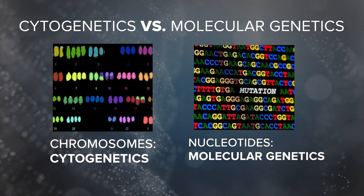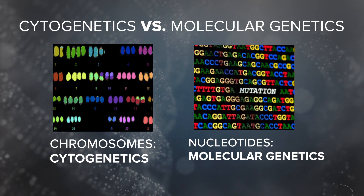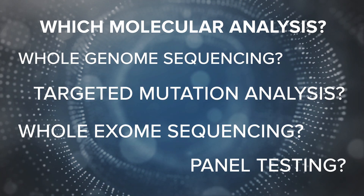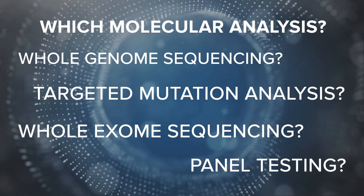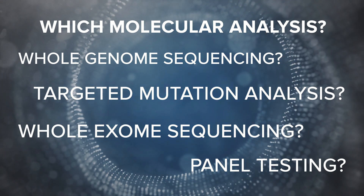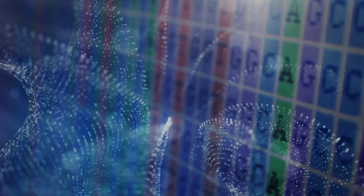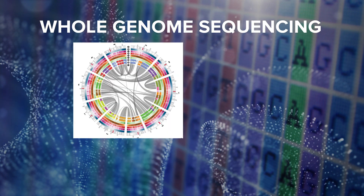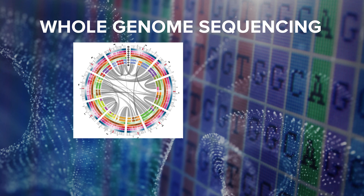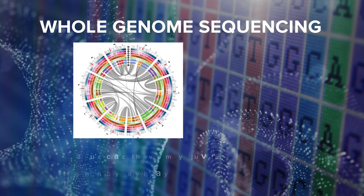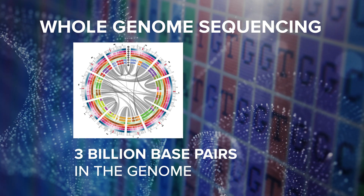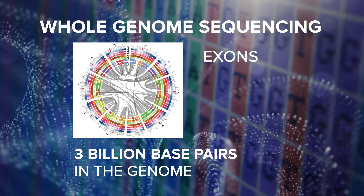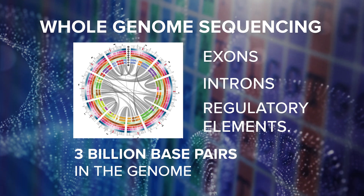Let's say that you've decided that you want to run a molecular genetics analysis. Now you'll need to consider which tests to use. To determine which is the best test for your particular case, you'll need to think about which part or parts of the genome and how much of the genome you need to assess. For example, if you want to look at all nucleotides in the entire genome, you can order whole genome sequencing. For a human, this means sequencing all three billion base pairs in the human genome. The whole genome includes coding regions like exons as well as non-coding regions such as introns and regulatory elements.